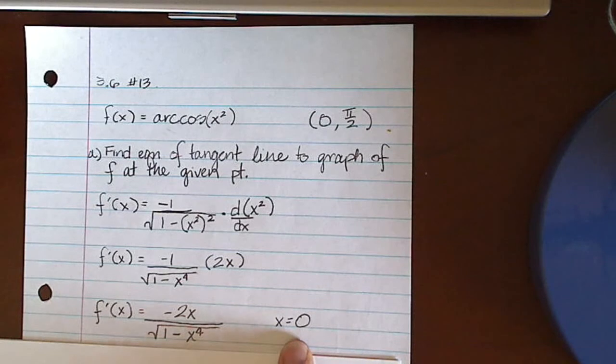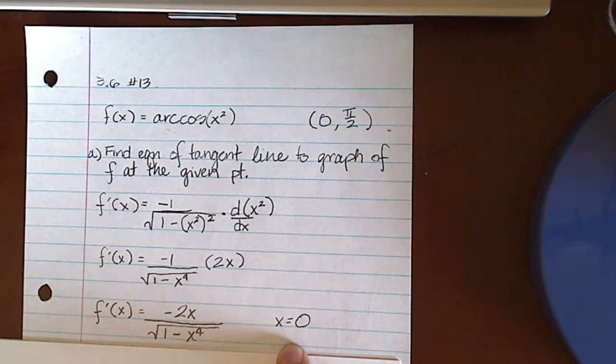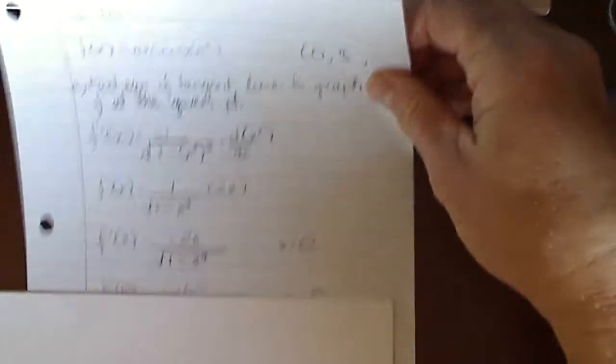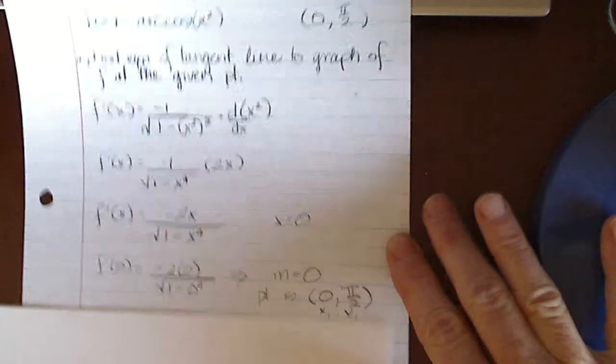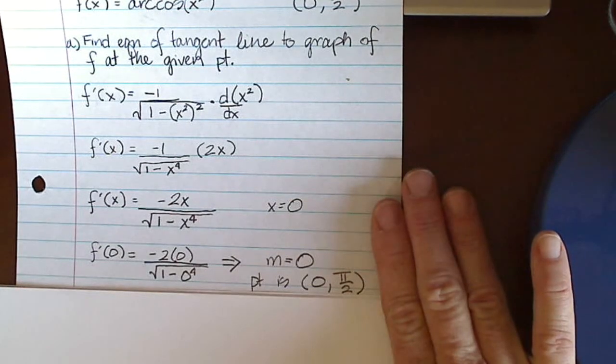I'm going to need to substitute in my x-coordinate to get my slope. So I do that, and I end up with a slope of zero.